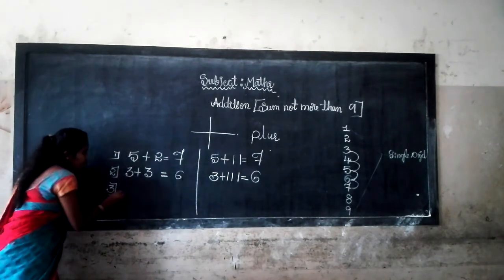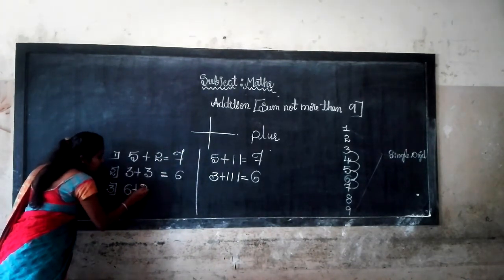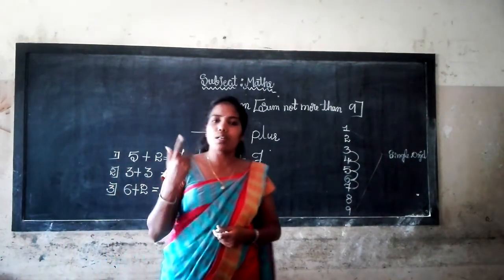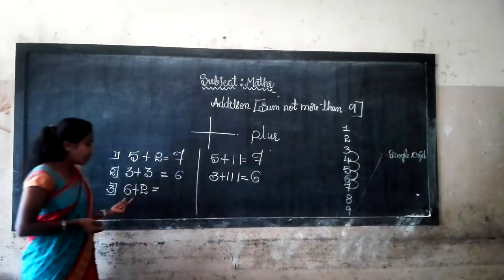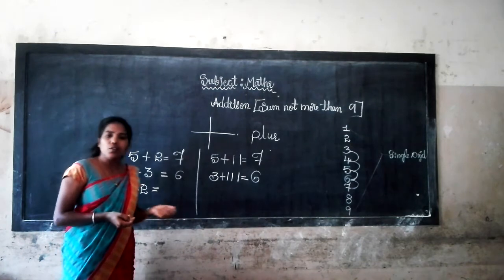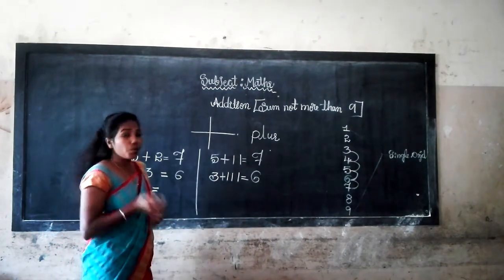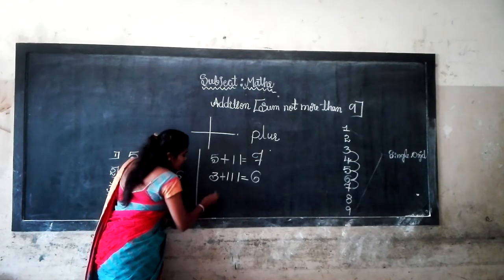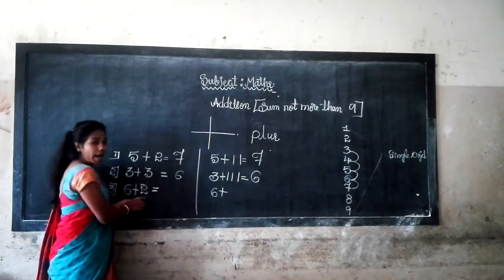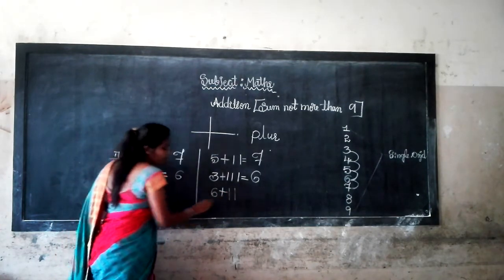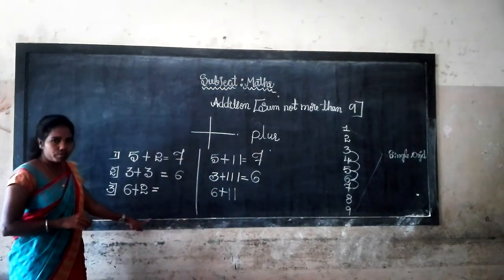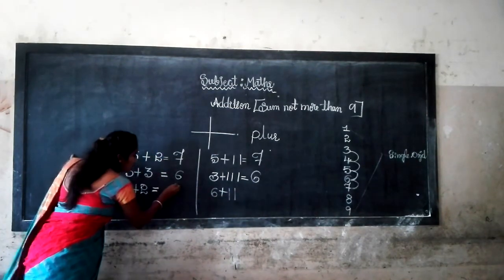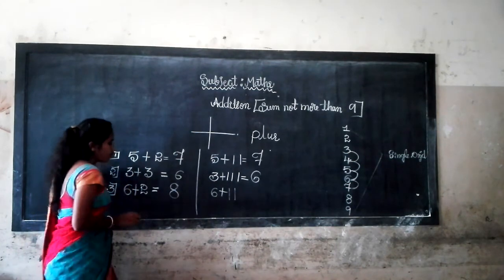Try to do the next example: six plus two. Here six is also a single digit number, two is also a single digit number. Now you add six plus two. Here six — add two: one, two. So six after number seven, after number seven — one more — we get number eight.